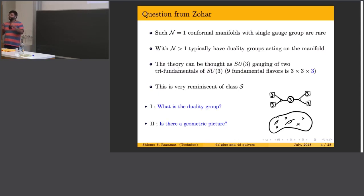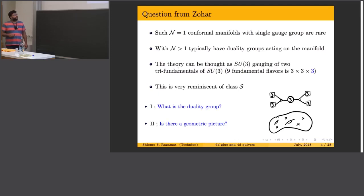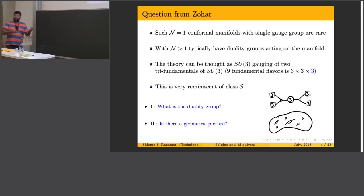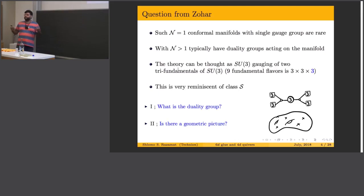Typically with higher amounts of supersymmetry, when we have such conformal manifolds, we have some interesting duality groups which act on them. Examples are N=4 and cousins of N=4. Moreover, this is a very neat theory. You can think of it as having nine fundamental flavors of SU(3), so you have 27 chiral fields. 27 is 3×3×3. It looks like you take two tri-fundamentals of SU(3) and glue them together with SU(3) gauging.